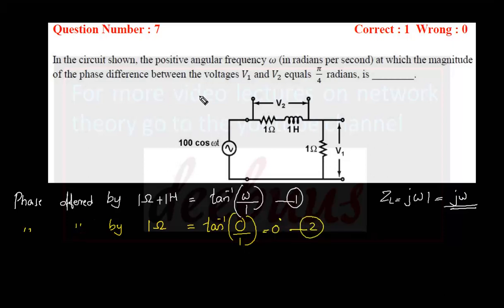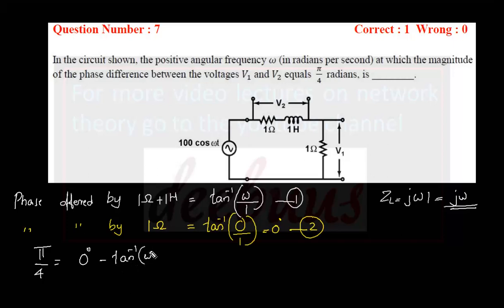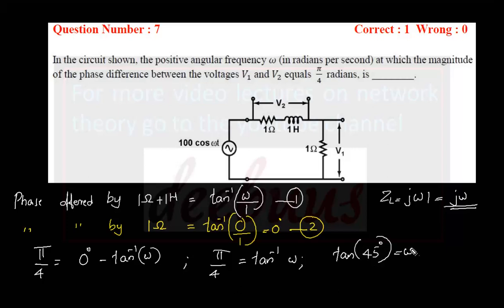The question states that the magnitude of the phase difference between V1 and V2 equals π/4 radians. So π/4 = tan⁻¹(0) − tan⁻¹(ω), which gives π/4 = tan⁻¹(ω). From that, tan(45°) = ω, therefore ω = 1. The answer is 1.